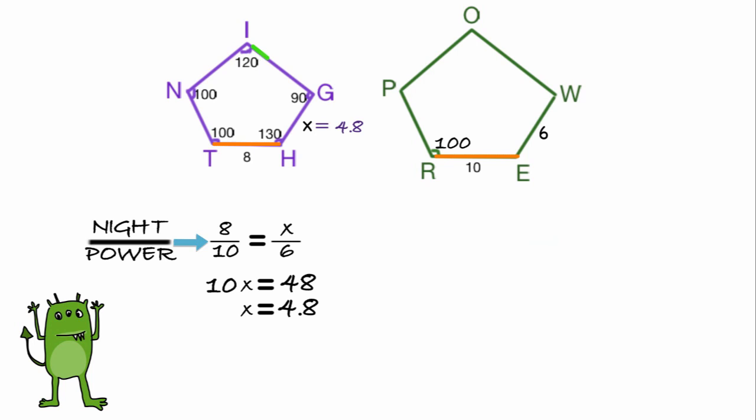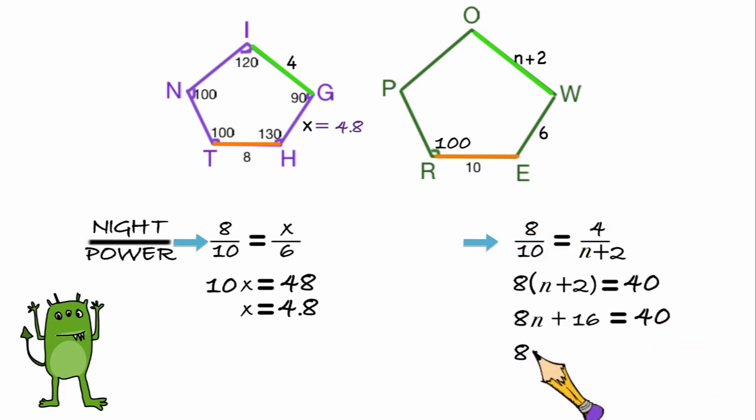What if we knew IG is 4 inches and OW is N plus 2 inches? And we wanted to find the value of N. Again, we'd set up our similarity ratio. 4 and N plus 2 are the measurements of corresponding sides. So, again, we're looking at night to power. Our ratio is 8 to 10 equals 4 to N plus 2. We'll be using cross multiplying to solve this, giving us 8 times the quantity N plus 2 equals 40, or 8N plus 16 equals 40. 8N equals 24. N is equal to 3.